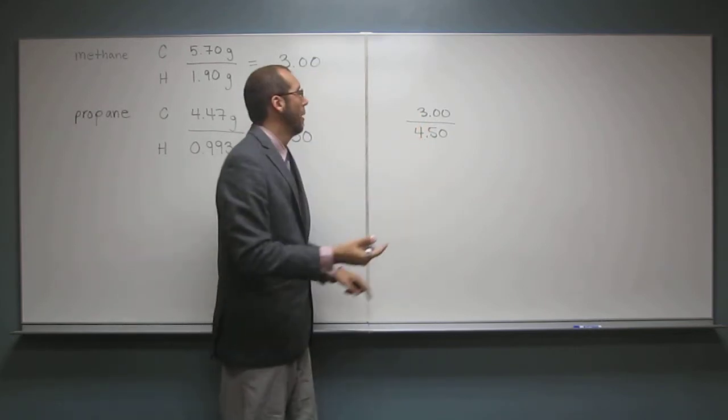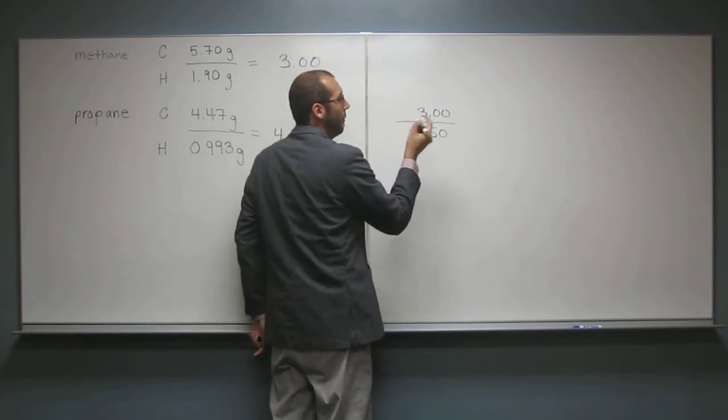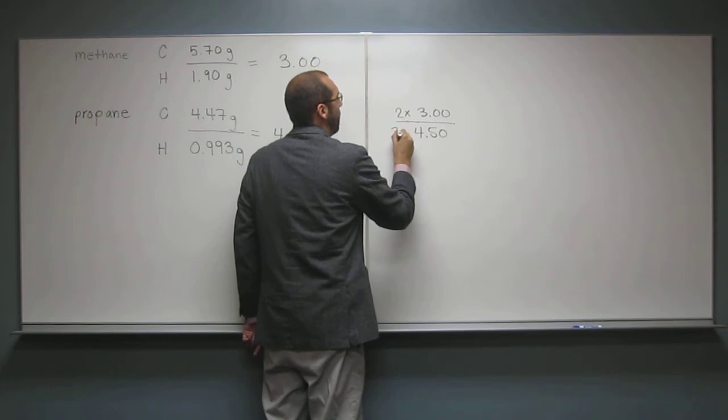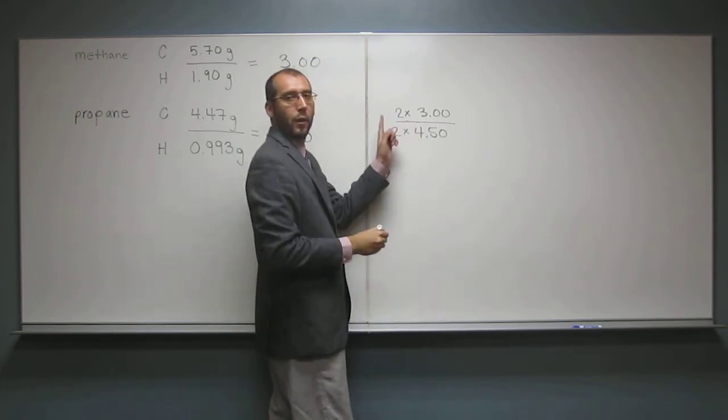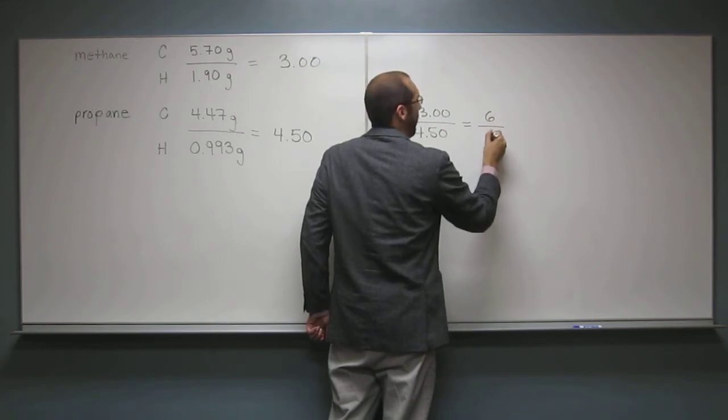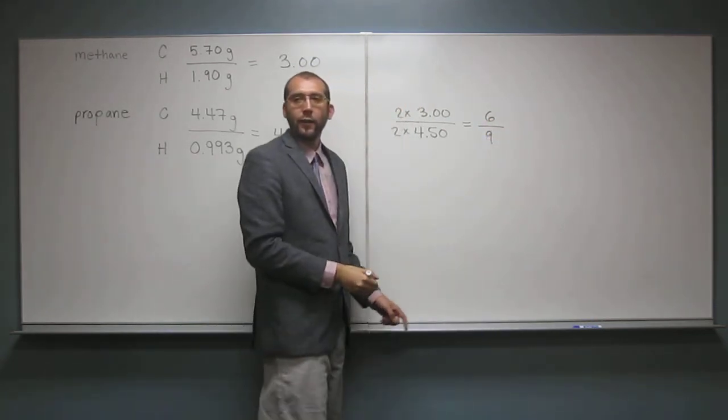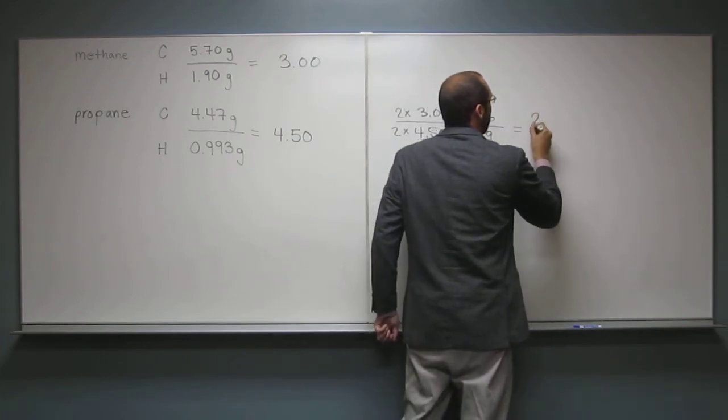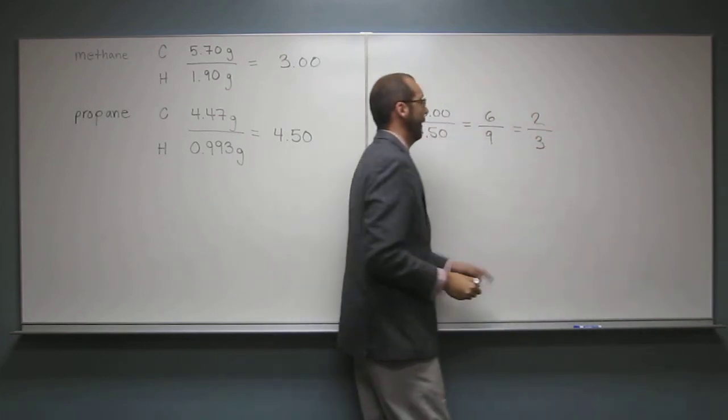But what you can do, and hopefully you've already thought about this, right? You can take them and multiply them both by the same number. And if we do that, we get 6 and 9, like that. And then we can take that down to 2 and 3, like that.